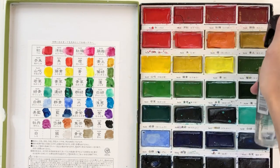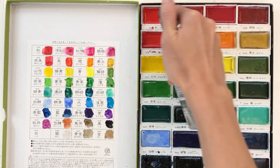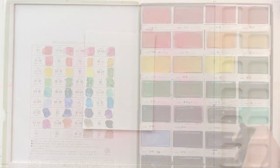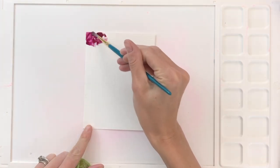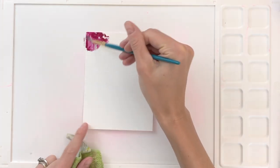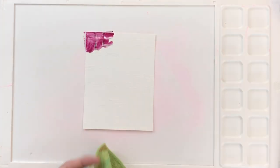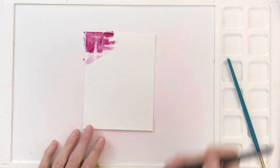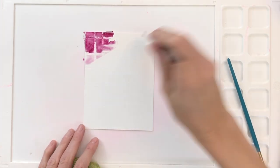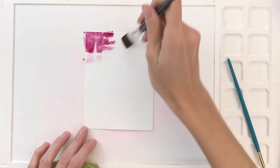I'm going to use my Gansai Tambi watercolors today. I'm going to spray some water in the pans of watercolor that I'm going to use, basically a rainbow of colors. I'm going to start with a maroon here up in the corner. I actually applied this directly to my dry panel and that's where I remembered that I wanted to add some water first.